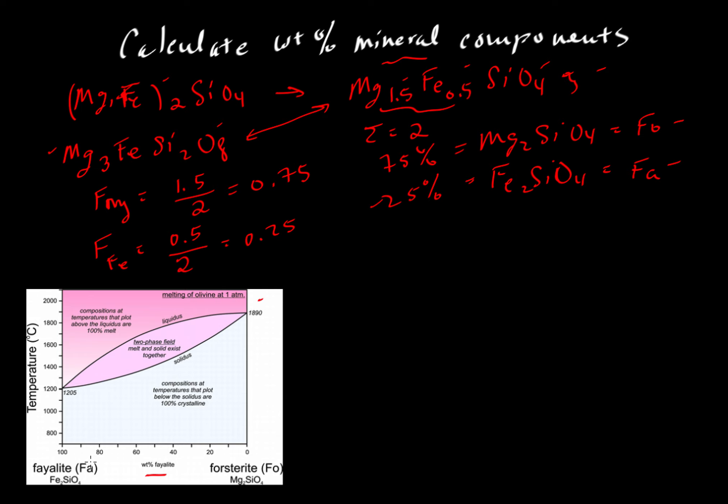We could start with fayalite at 100, and from left to right it goes down to 0. So 25% would be about there, but that's only on a molecular basis. This is not the correct place to plot this mineral composition. We need to convert to weight percent fayalite.